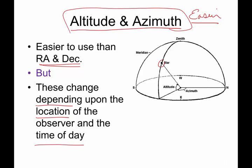So why the heck am I going into a system like altitude and azimuth that is not as precise, it's not as scientific as right ascension and declination?